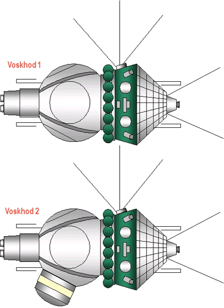Voskhod 1 was used for a three-man flight whereas Voskhod 2 had a crew of two. They consisted of a spherical descent module diameter 2.3 meters which housed the cosmonauts and instruments.